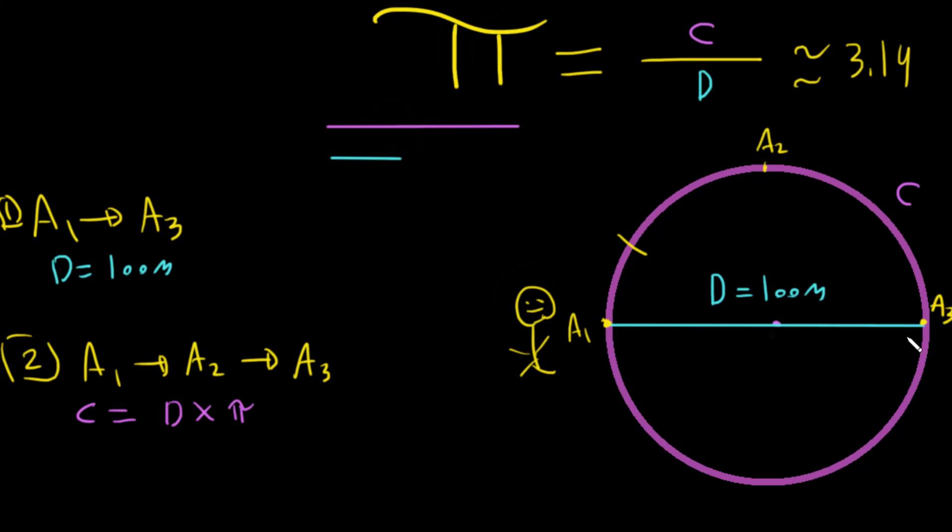We know that this semicircle is only half of C. And we know it's given that D is 100. Let's say Pi is approximately 3, so this is approximately 300 meters. Then half of the circle equals half multiplied by 300, which is approximately 150 meters.